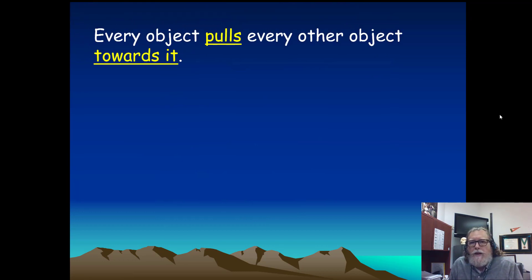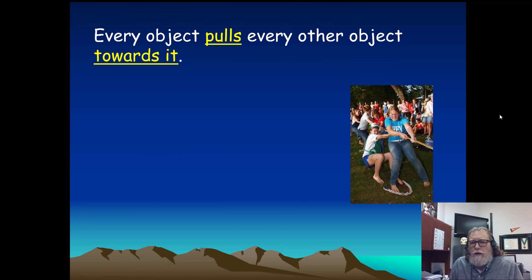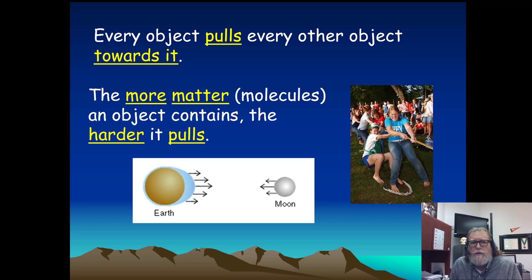So every object pulls every other object towards it. It's kind of like tug of war. Every single thing has this gravitational force associated with it. The difference is that the more matter that you have in an object, the more molecules there are, then the harder it is going to pull.